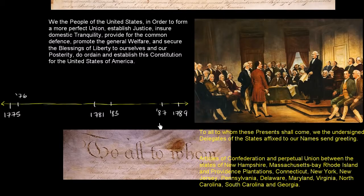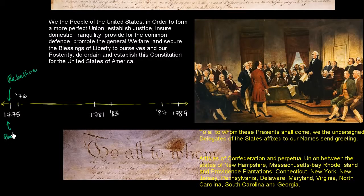Let's start in 1775, because that's when the rebellion really begins. That's when you have the battles of Lexington and Concord and Paul Revere riding to say that the British are coming. They started to rebel against the taxes that Parliament had put on them, though people weren't quite clear what the rebellion was all about, especially those not up in Massachusetts where the rebellion was happening.